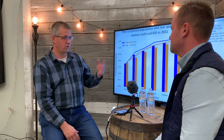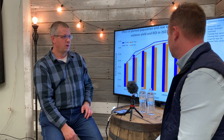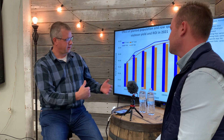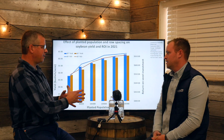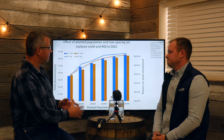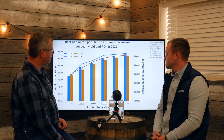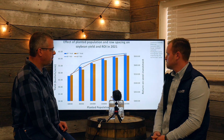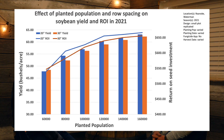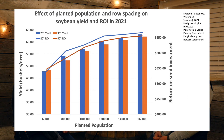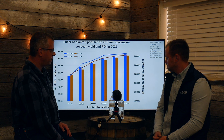Another interaction to look at is row spacing and population. The question is: should you plant at a narrower row spacing? In a lot of situations that does make sense. We can see it's worth a couple of bushels in yield if you plant in 20-inch rows over 30s, and that's pretty consistent — we've seen it consistently over the last few years, giving a little bit of ROI benefit from planting in narrower rows.